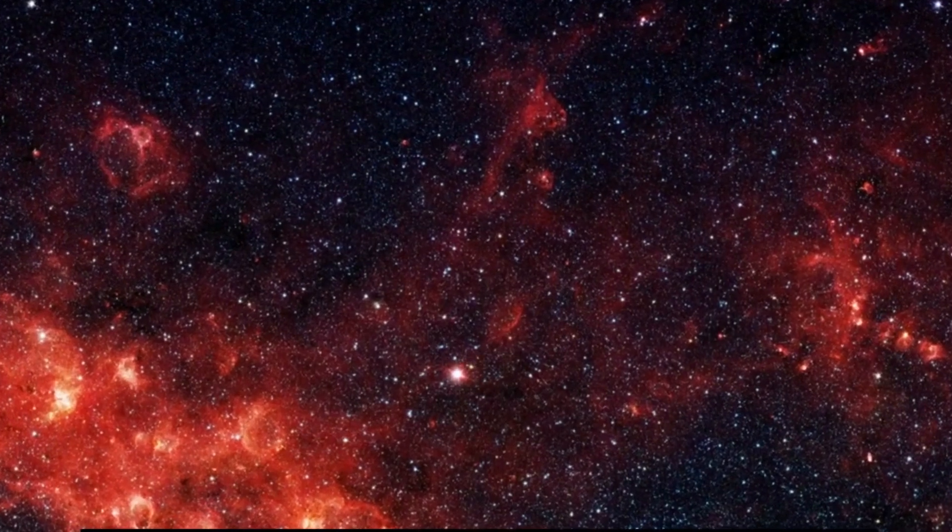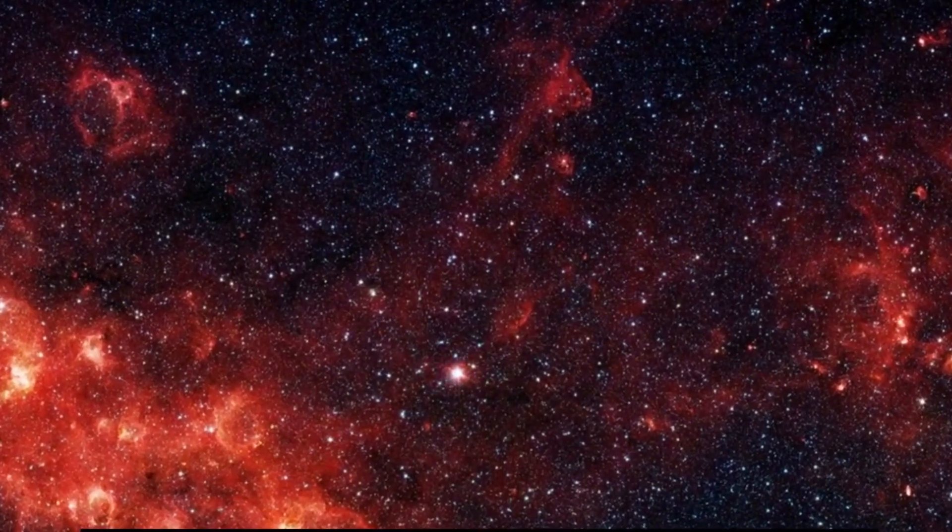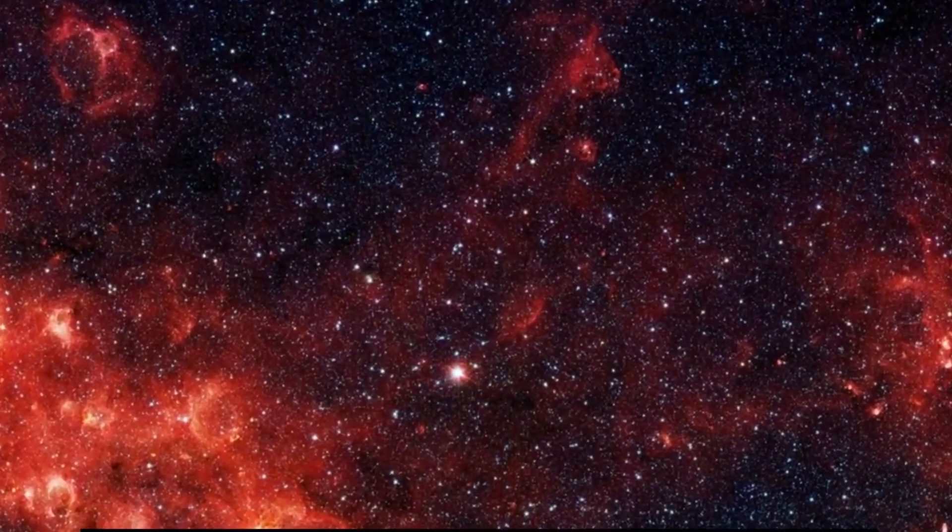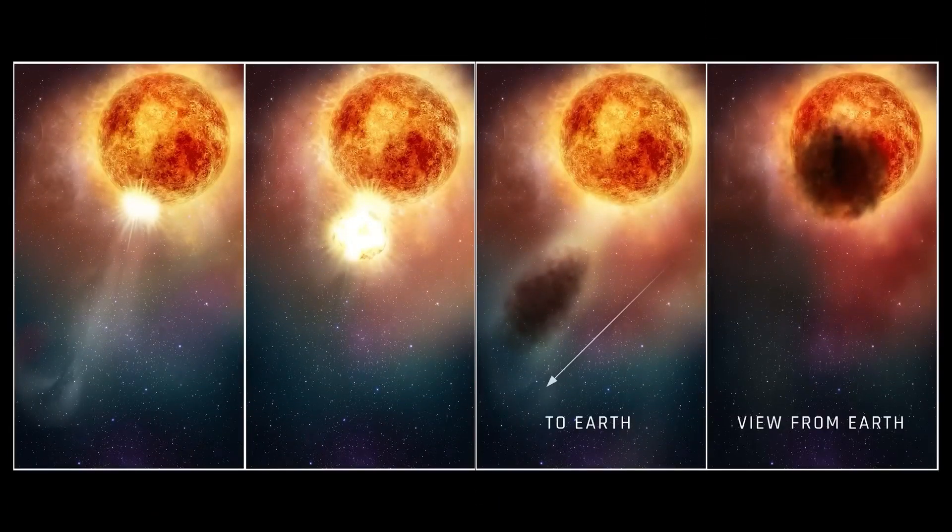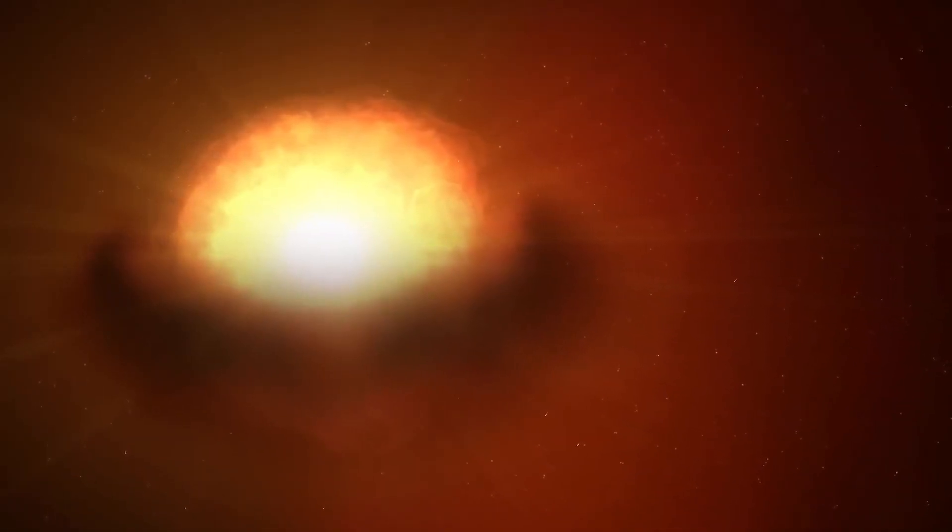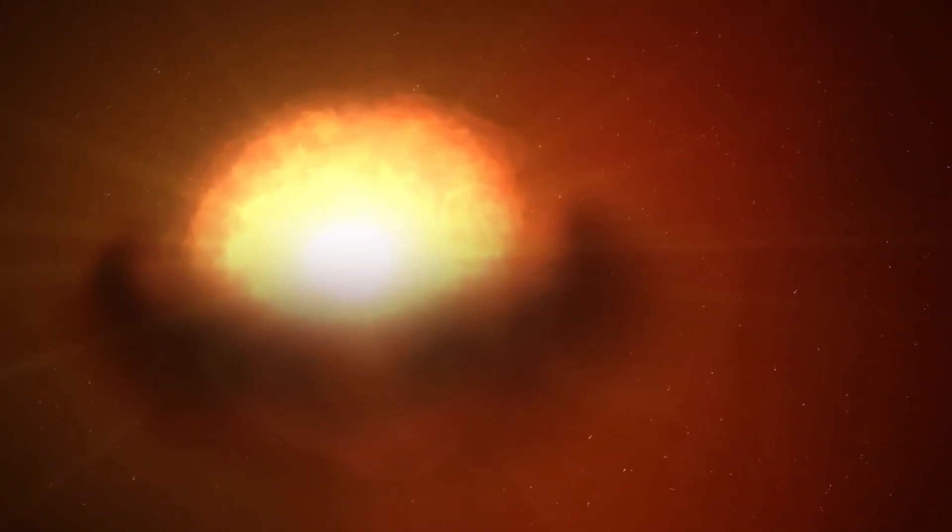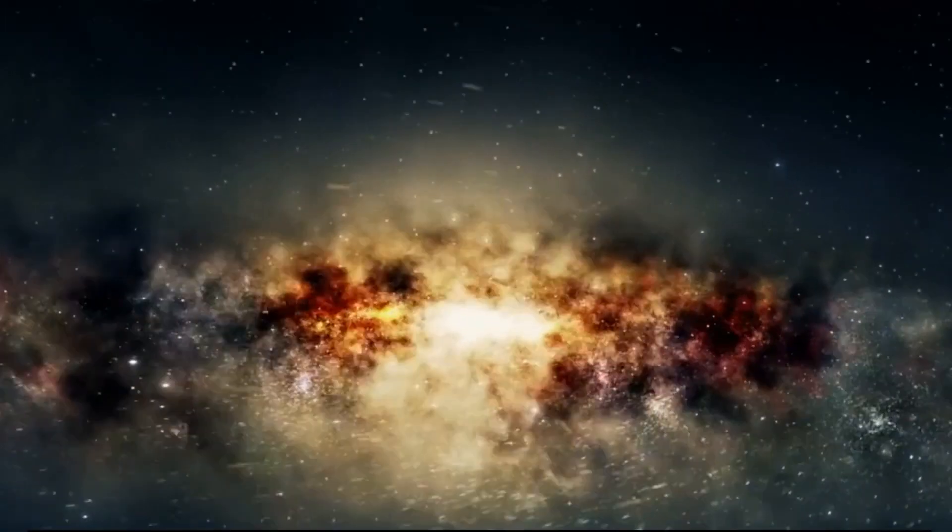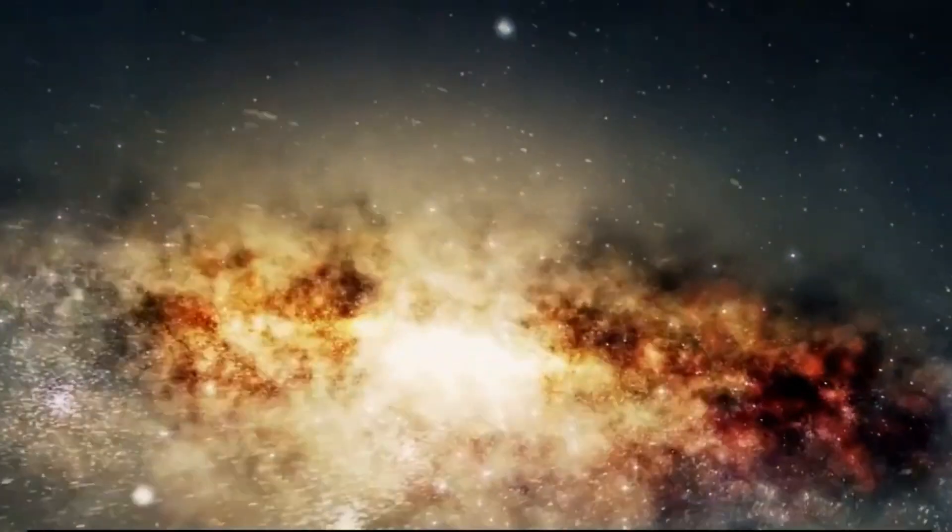Now, back to Betelgeuse's mysterious behavior. While it's a variable star, the Great Dimming in 2021 was off the charts. It dimmed by a whopping 60% in just a few months. The culprit behind this cosmic magic trick turned out to be a cloud. Stars like Betelgeuse often have gas and dust swirling around them.